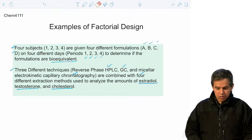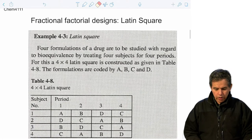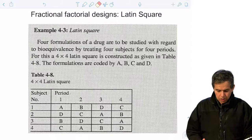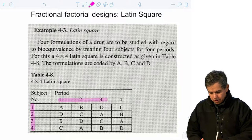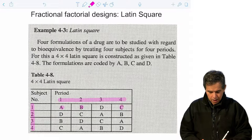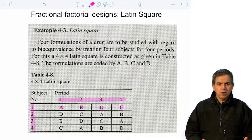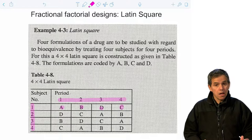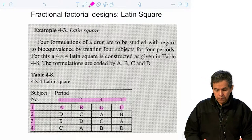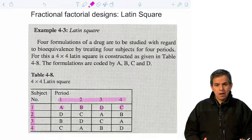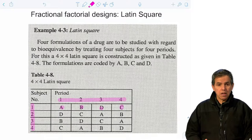One approach to handling this complexity is what we call a Latin square. A Latin square refers to the combination of multiple factors that need to be measured — subjects, periods, and different formulations A, B, C, and D. The idea is that none of the conditions are repeated with respect to each other. In this course we will not be using a Latin square, as we have to do at least 16 measurements in this situation, which is usually expensive and time-consuming.